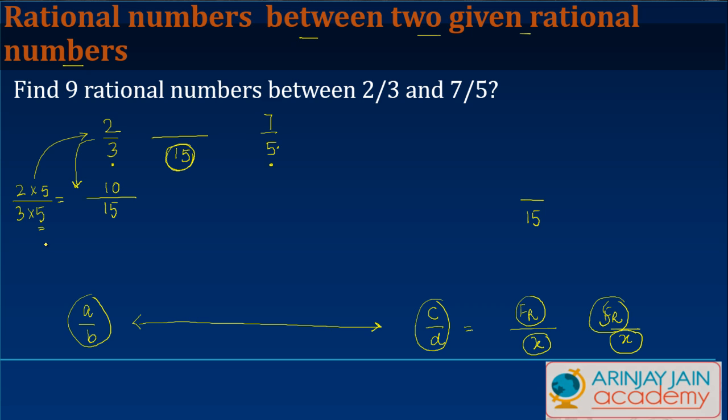So I get 2 times 5 which is 10/15. Now similar is the case over here - to make 7/5 into 15 as this denominator, I need to multiply it by 3. 5 times 3 gives me 15.